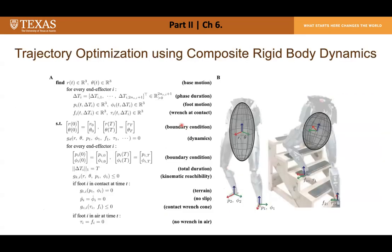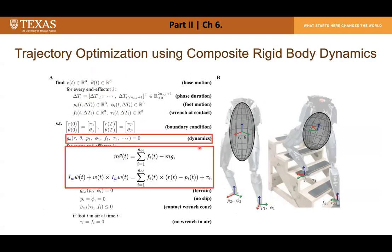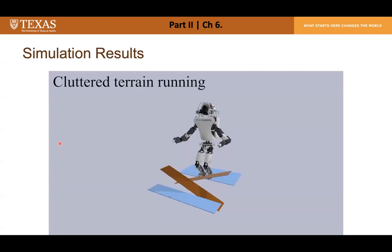The trajectory optimization formulation optimizes floating base trajectories, end-effector trajectories, and reaction force profiles at contact while satisfying dynamic and contact constraints. In the dynamic equation, the inertia term is no longer a constant but a neural network function trained earlier, allowing composite inertia to vary based on base and end-effector configurations. A demonstration shows the robot running and climbing upstairs, and also using its arms for inertia shaping when jumping. This study was submitted to Frontiers in Robotics and AI in 2021.